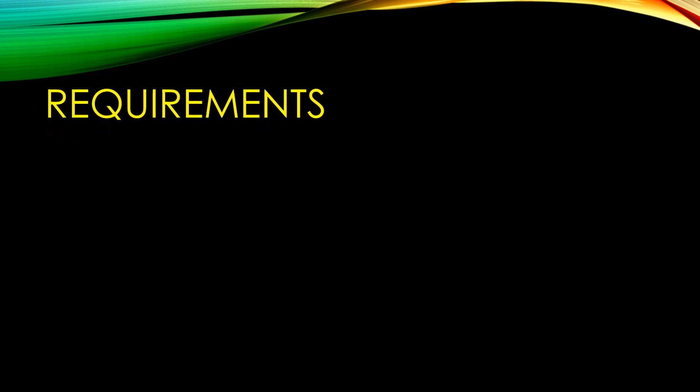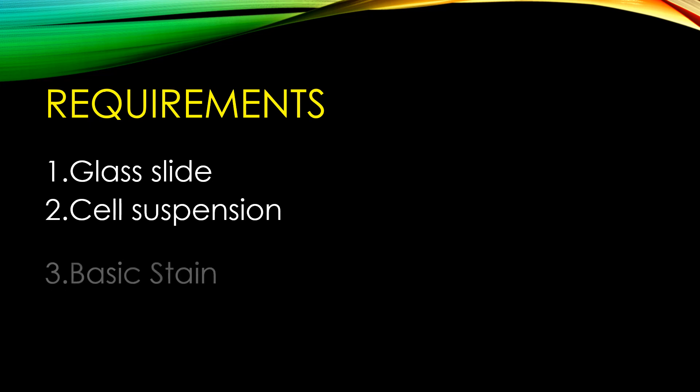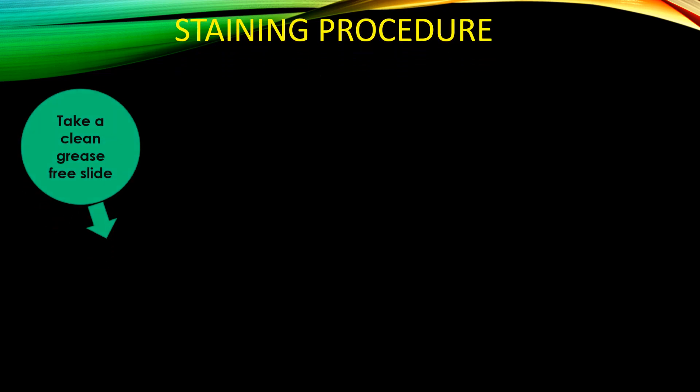Let's see the requirements for the staining procedure: a glass slide, a cell suspension, a basic stain, and a microscope. First, take a clean grease-free slide. To prepare one, take a glass slide, wash it with detergent, air dry it, and pass it through a Bunsen burner flame rapidly three to four times to get a clean grease-free slide.